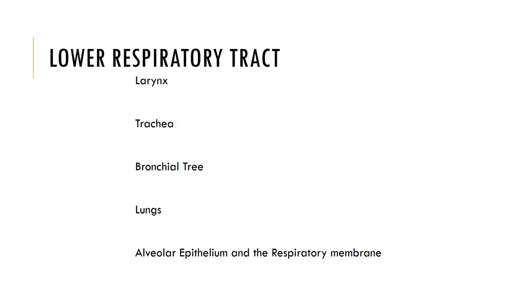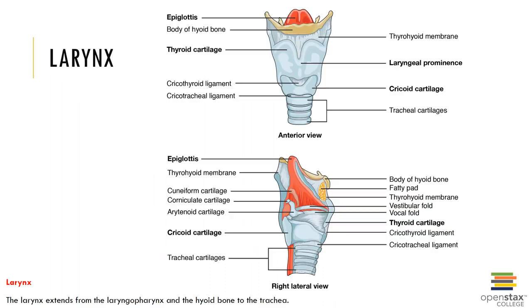The lower respiratory tract consists of the larynx, trachea, bronchial tree, lungs, alveolar epithelium, and the respiratory membrane. The larynx is a cartilaginous structure that surrounds and protects the glottis and is more commonly called the voice box. It consists of the glottis, the structure through which inhaled air leaves the pharynx and enters the larynx through the narrow opening.